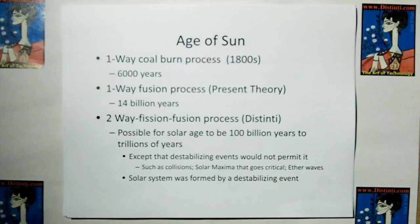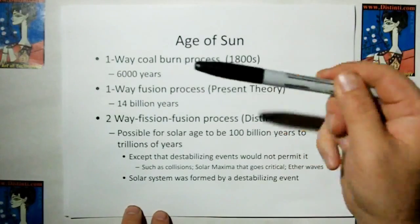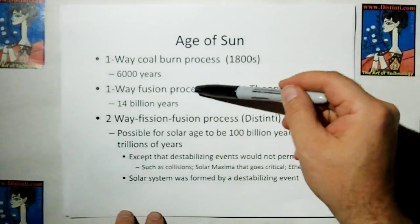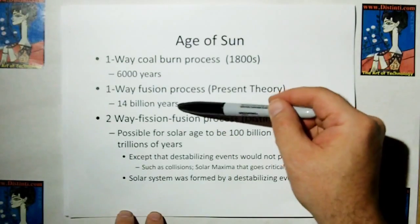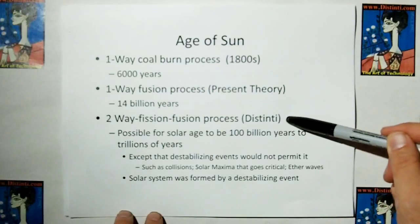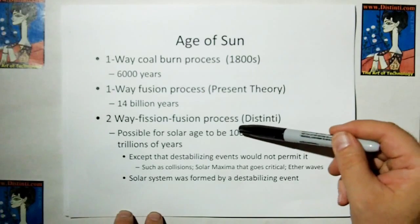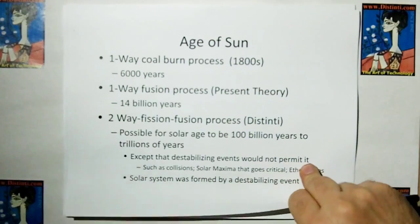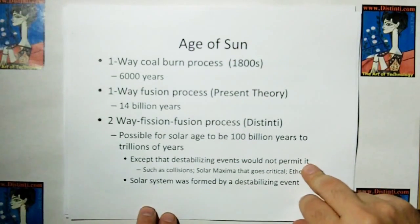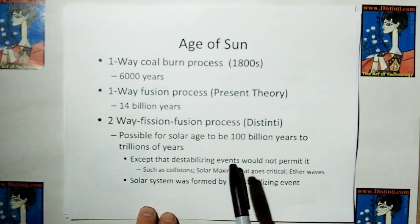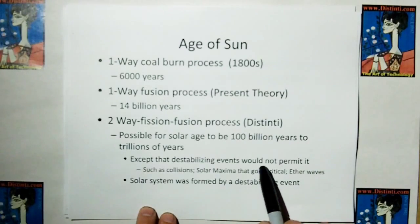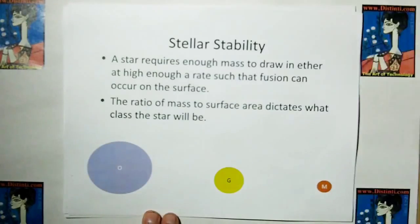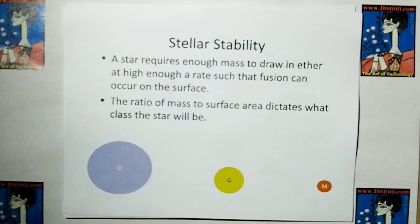So let's look at the comparable ages of the Sun. With the one-way coal burning process, they said the Sun lasted 6,000 years. With the modern fusion-only process, they say it lasts 14 billion. But if we have a two-way fission-fusion process, then this Sun has to be at least hundreds of billions of years old, if not trillions of years old. Except that it would probably never get to a gas ball because other destabilizing events like collisions and a whole bunch of other items would probably never allow it to get there.